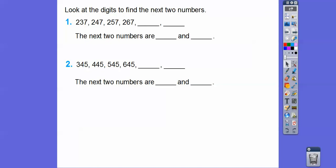Look at the digits to find the next two numbers. So there's a pattern with this. This one goes 237, 247, 257, 267. Do you see we're adding one to all the tens digits? I highlighted them in red here. So the next one is going to be 277 and then 287 right there. We're just adding one to the tens digits.